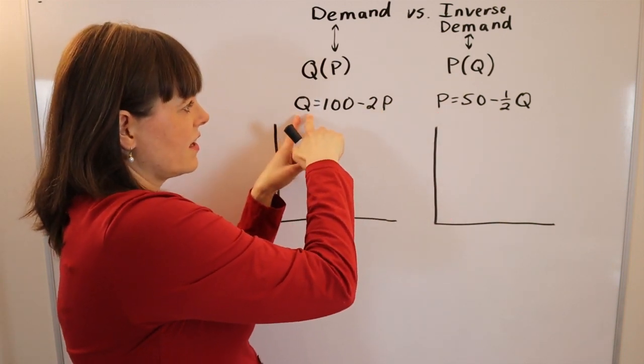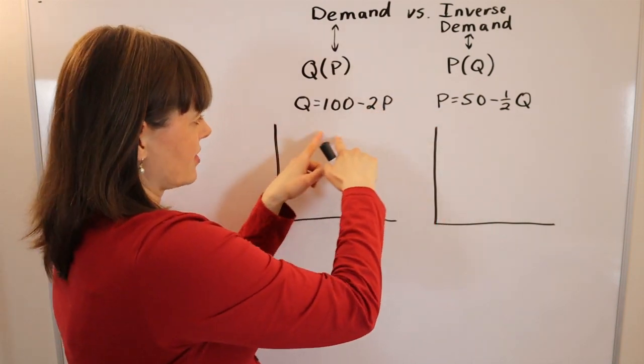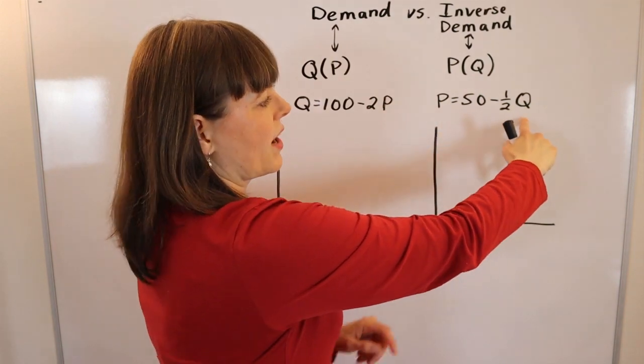Here we have quantity equals a function of price. And if you subtract 2p, rearrange, do the math, you get p equals 50 minus 1 half q.